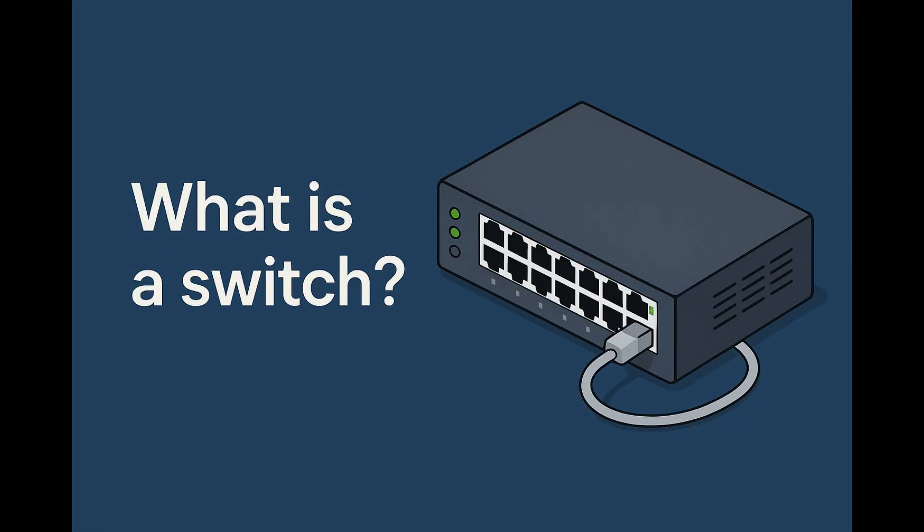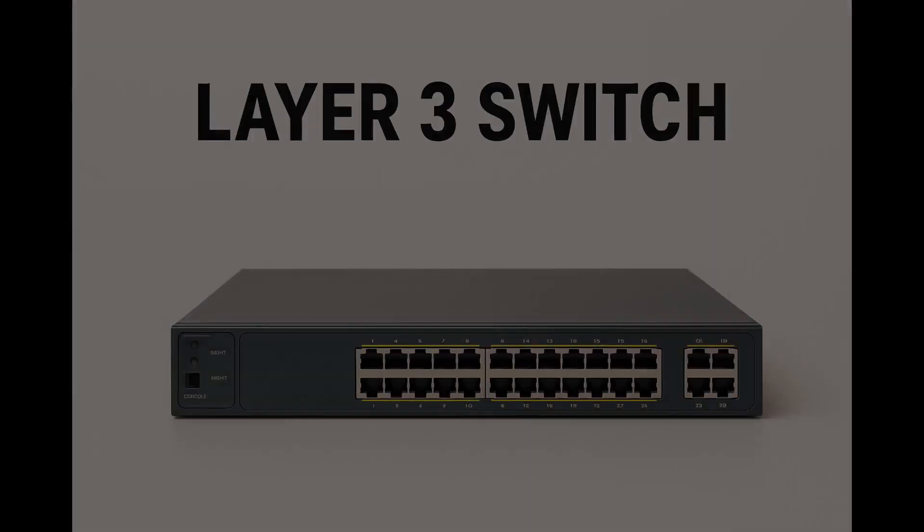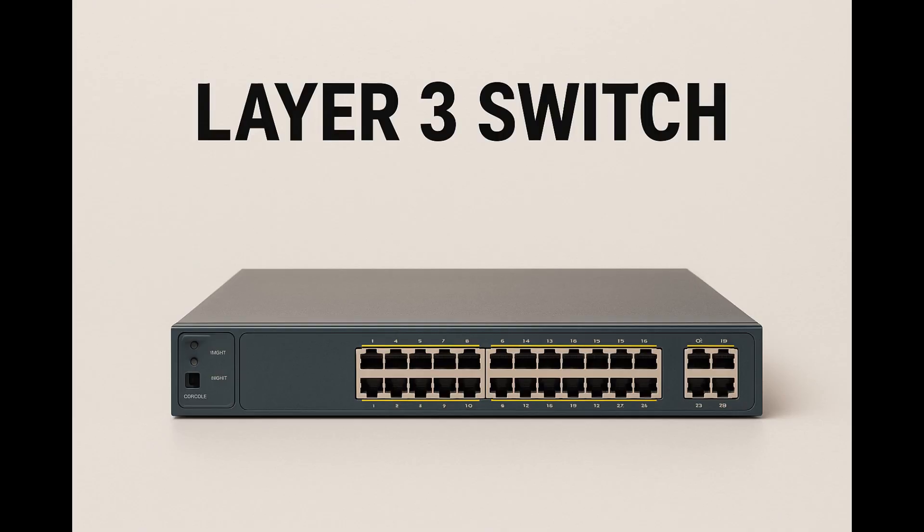Now that you have a bit more knowledge about the topic, we can get back to the question — what is a switch — and answer it more precisely. A switch is a network device that works on layer two of the OSI model, and therefore it works with MAC addresses. But as you may have noticed, I said that switches usually work with MAC addresses, because we can also have layer three switches, which can work with IP addresses and are usually more expensive as well.